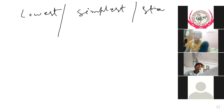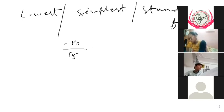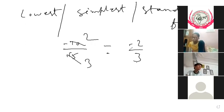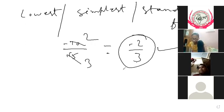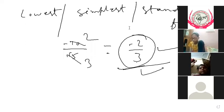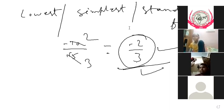Now, what is the standard form? This is also called the lowest form or the simplest form. For example, minus 10 upon 15 — we divide both by 5, giving minus 2 upon 3. Since 2 and 3 cannot be divided by any common number, this is the standard form, simplest form, and lowest form.